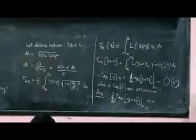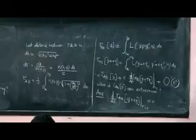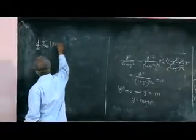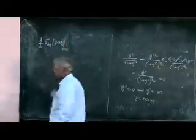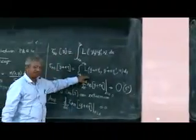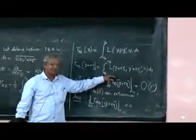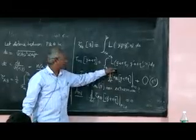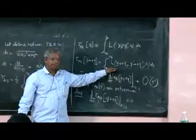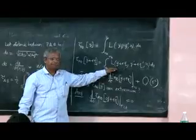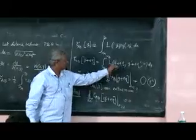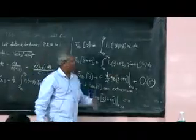So, d by d epsilon of τ_AB of y plus — this is what we are going to do. To calculate this, this is our τ. This is what we have to differentiate with respect to epsilon. So what will be the derivative of this with respect to epsilon? Derivative with respect to this argument, into derivative of this with respect to epsilon — that is the first term.